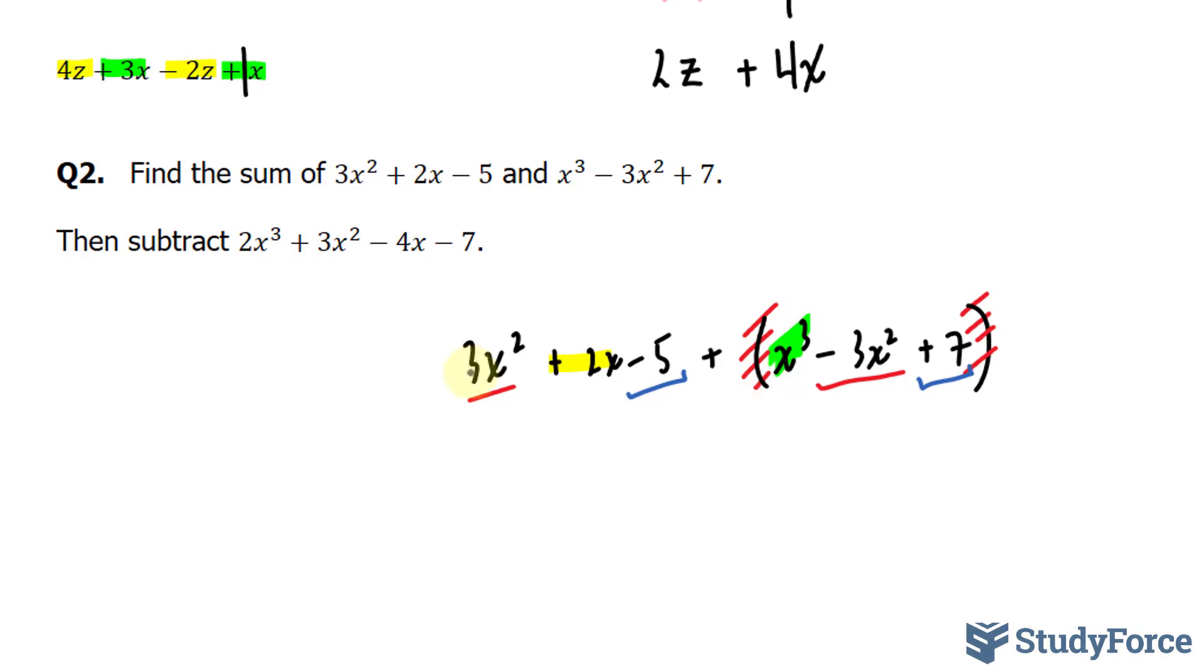So let's combine 3x squared with minus 3x squared. 3 minus 3 is equal to 0. 0 times x to the power of 2, well it's nothing. We don't have to worry about that anymore. Minus 5 and plus 7. Minus 5 plus 7 is positive 2. These weren't alike with anything else so I'll write down 2 plus 2x plus x to the power of 3. We've successfully combined this expression to that one.